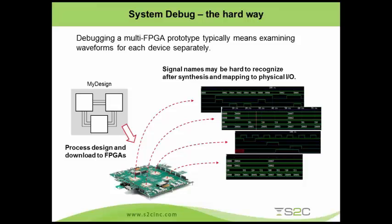My fourth point is about debug. Yes, debug can be difficult — that's a big challenge. The number one issue is that most tools today only support a single FPGA. If you have a design across four FPGAs, you're looking at one waveform at a time and trying to correlate multiple waveforms to get meaning. On top of that, most tools use gate-level signal names, which is very difficult to work with. Sometimes the signals you're trying to observe get synthesized or optimized out, making them impossible to see.